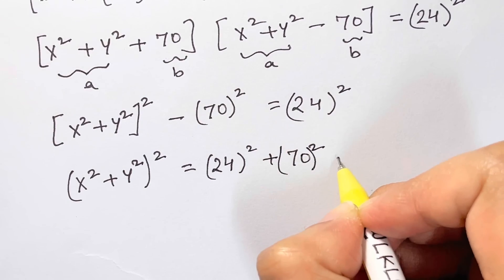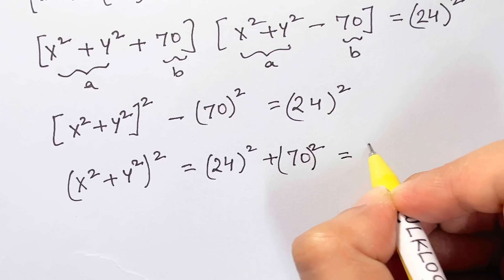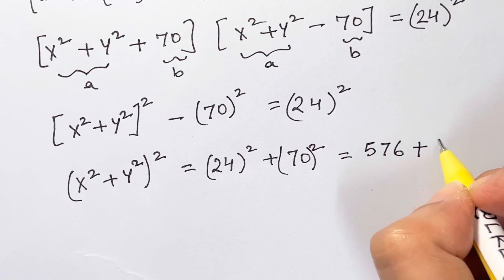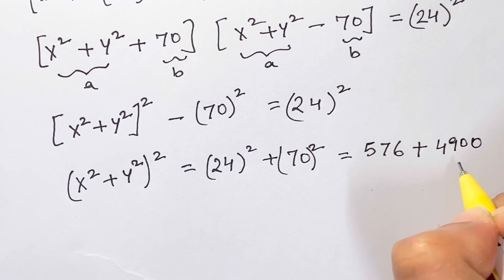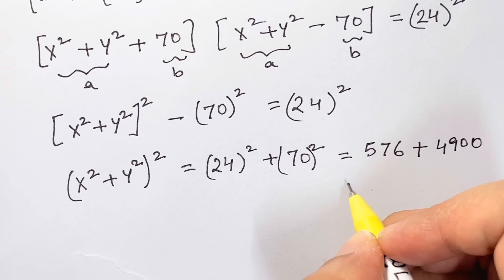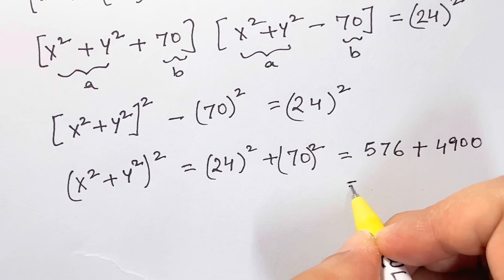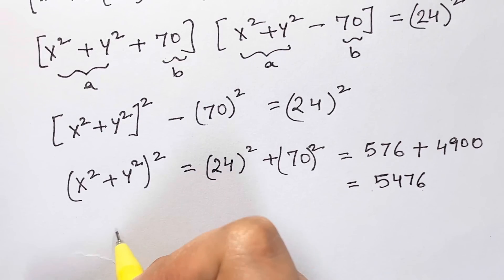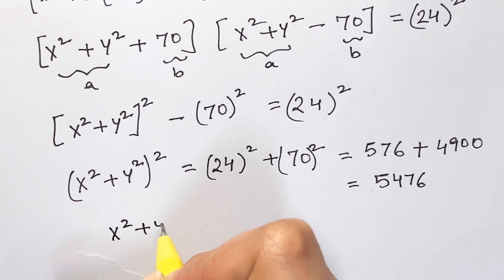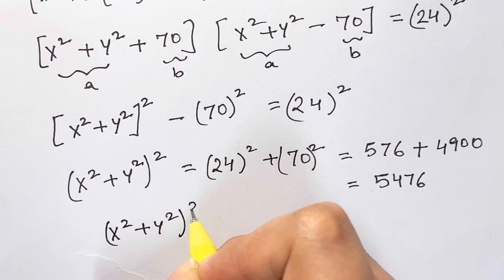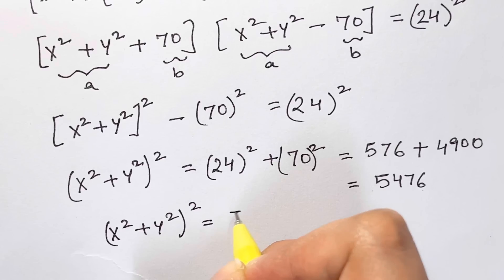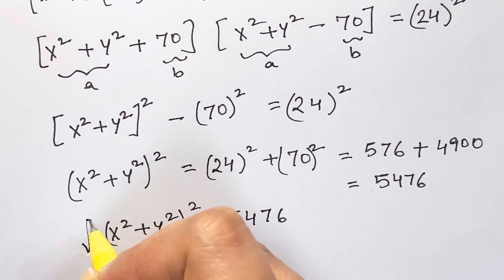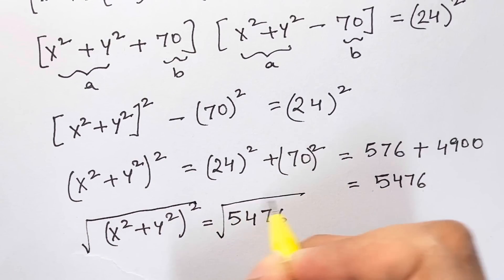24² is 576 and 70² is 4900. Adding them up we get 5476. So (x² + y²)² = 5476.